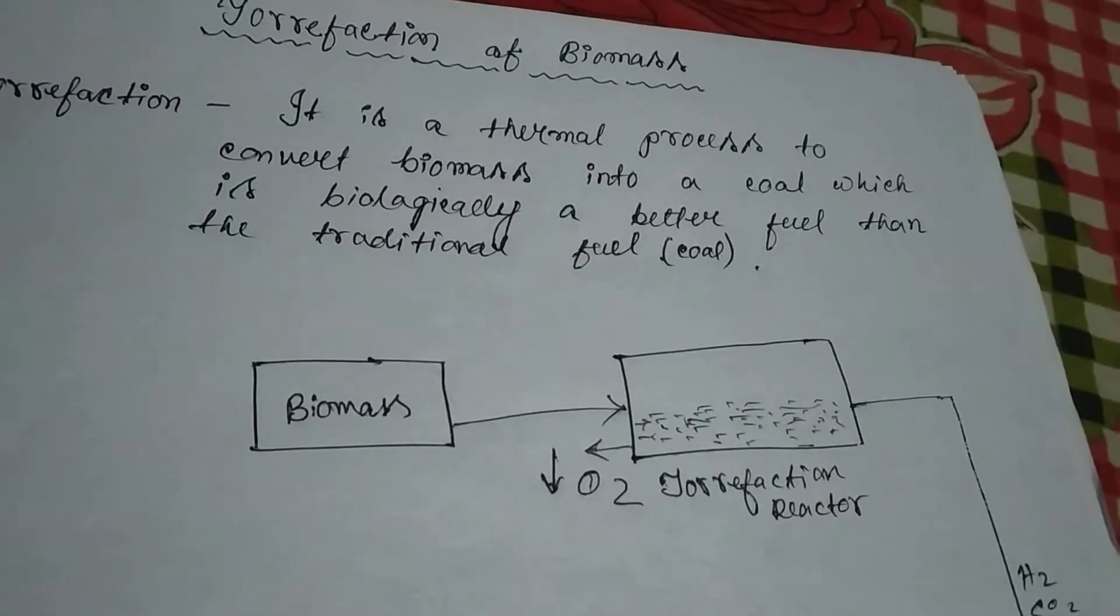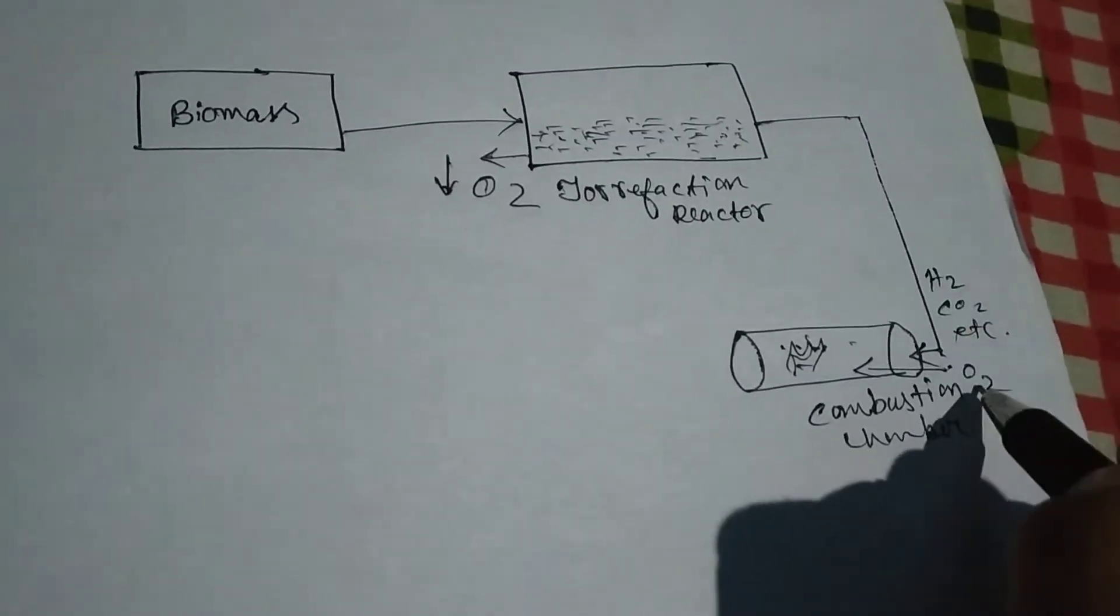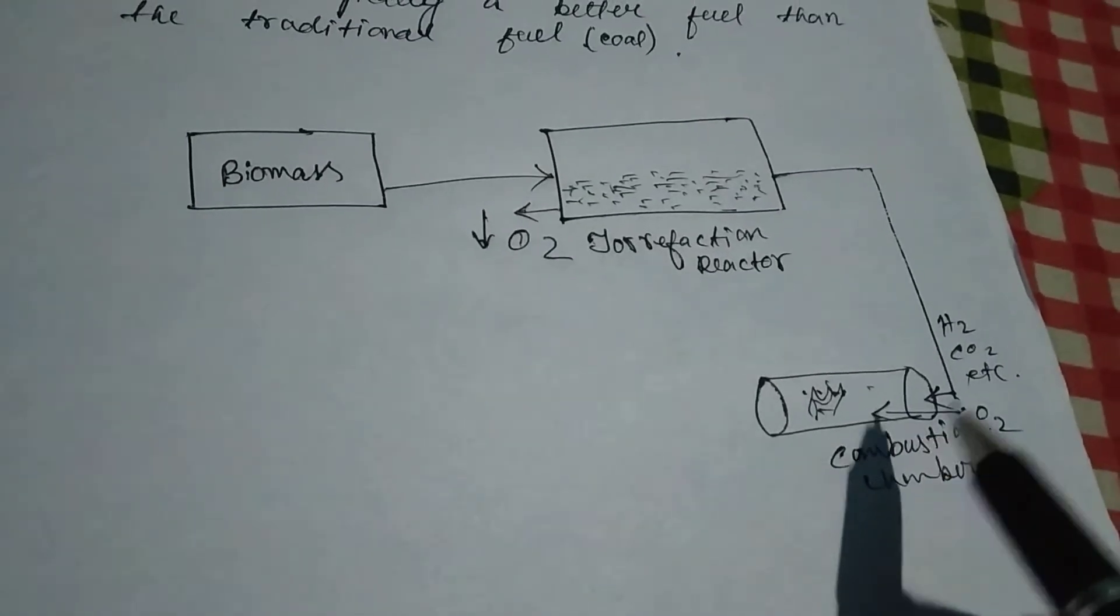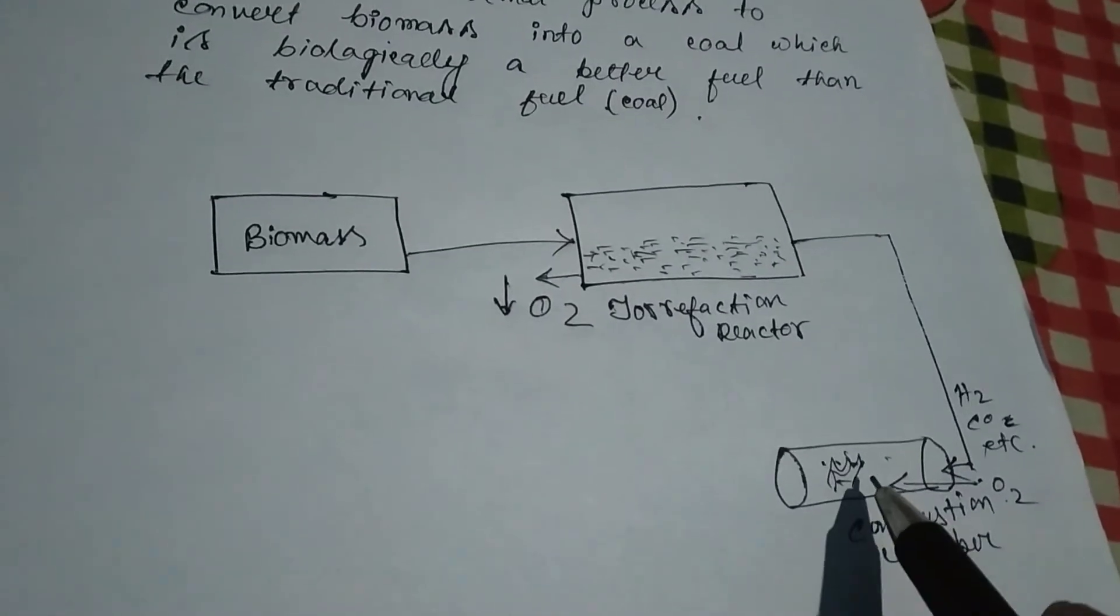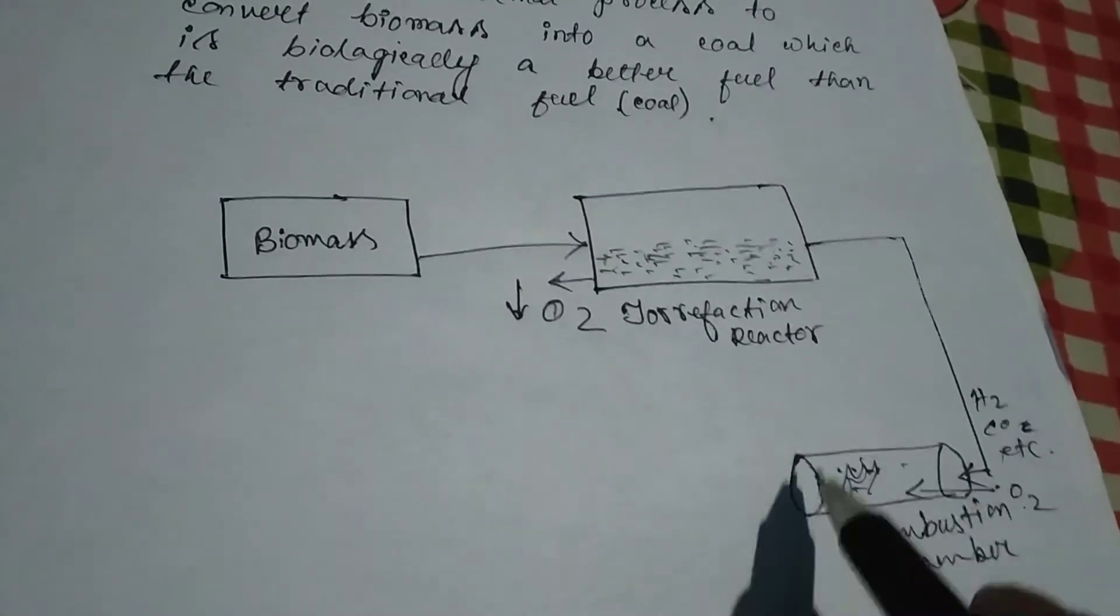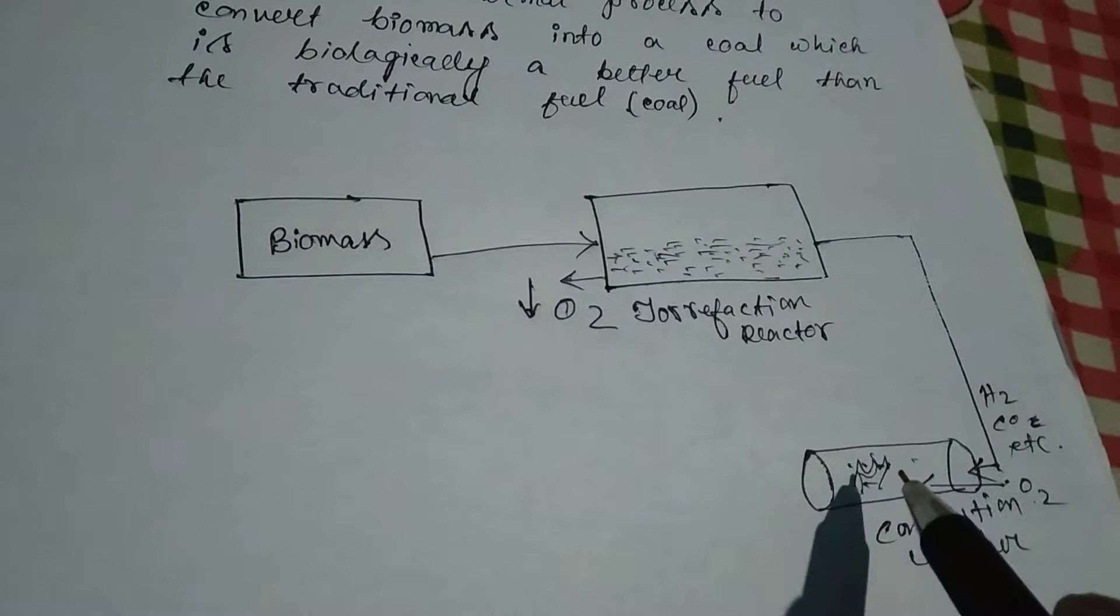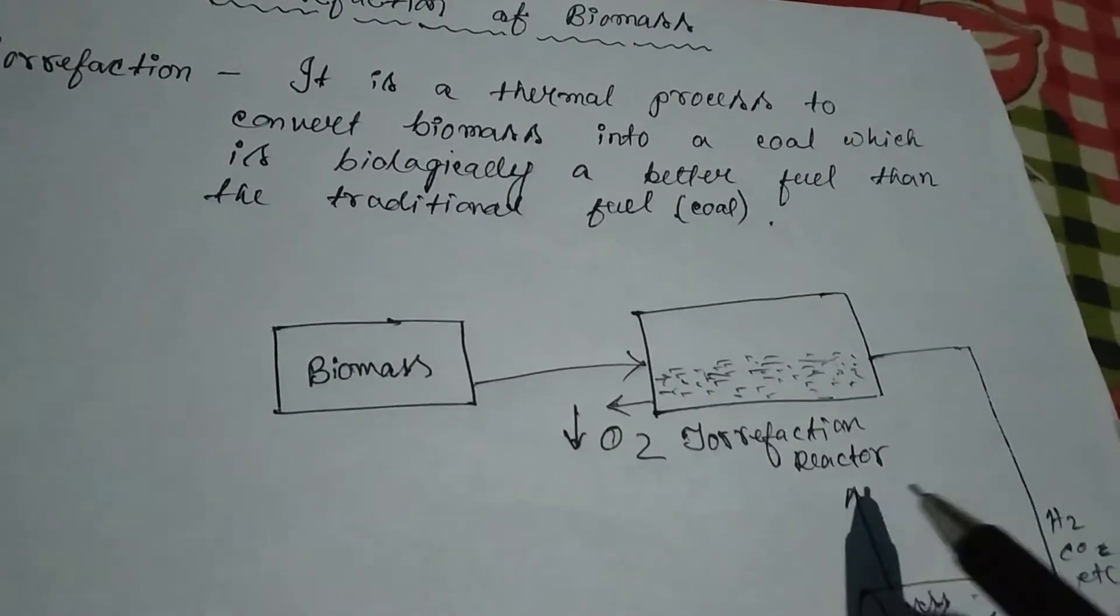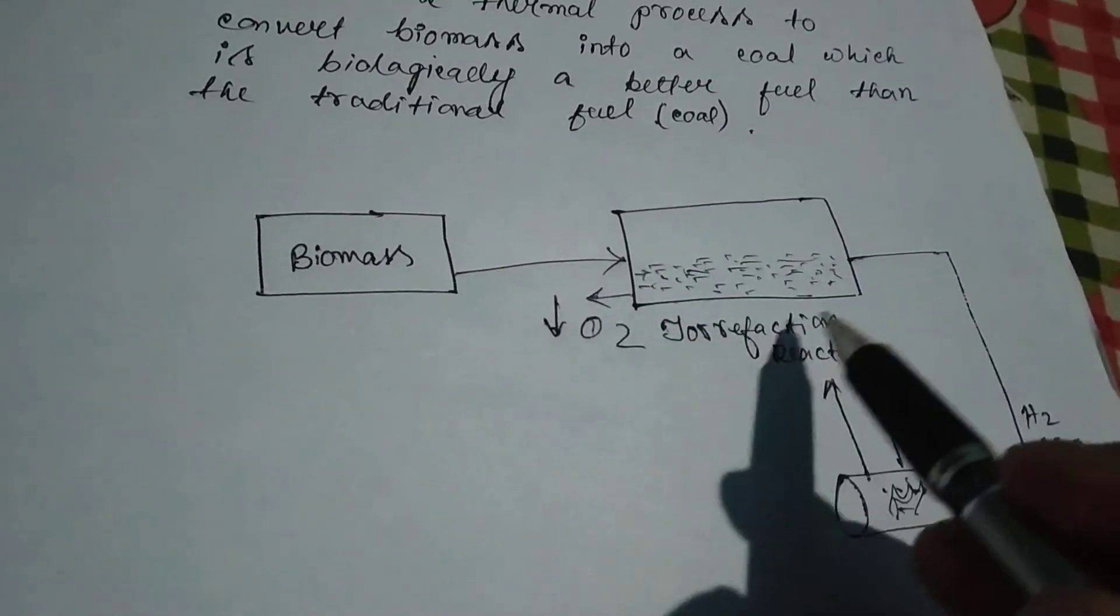These gases are burned by applying oxygen to this chamber. When these gases are burned, the heat generated in this combustion chamber is utilized for the burning of the grains in the torrefaction reactor.